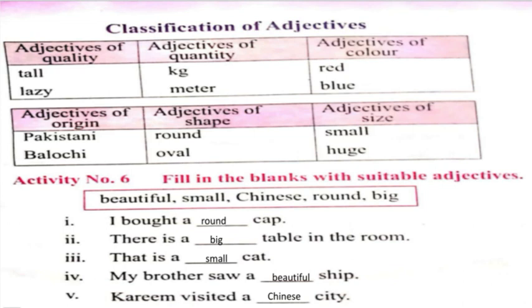Activity number 6: fill in the blanks with suitable adjectives — Beautiful, Small, Chinese, Round, and Big. I bought a round cap. There is a big table in the room. That is a small cap.